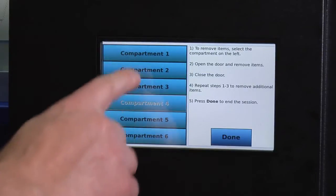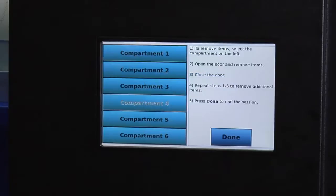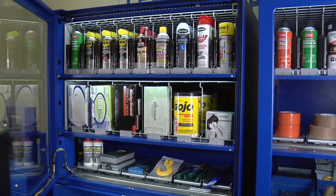Touch the corresponding compartment on the keypad you wish to access, whether that's a locker, a cabinet, or a drawer. That compartment light will illuminate and the compartment will unlock.